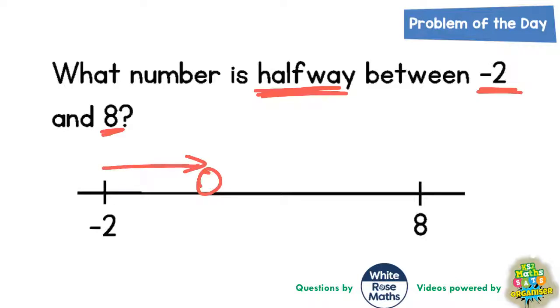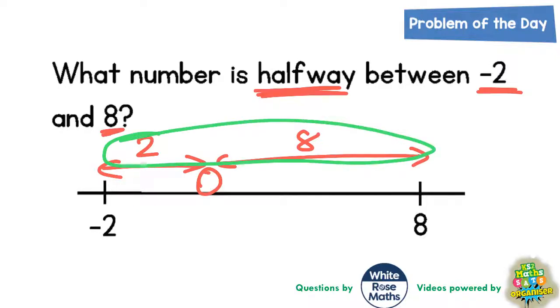So minus 2 to 0 is obviously a gap of 2. And 0 up to 8 is a gap of 8. Now that gives you a total gap of 2 plus 8. 2 and 8 makes 10. So the total gap between minus 2 and 8 is 10.